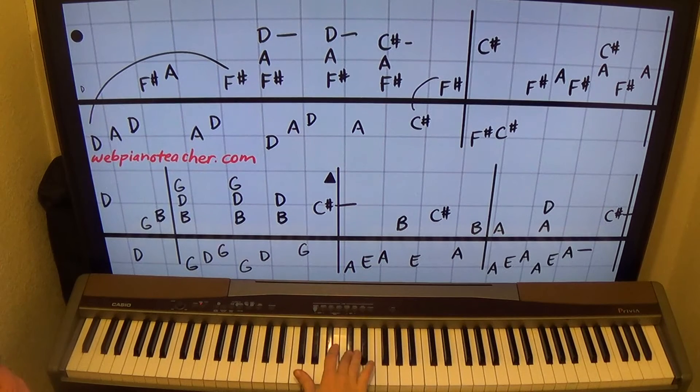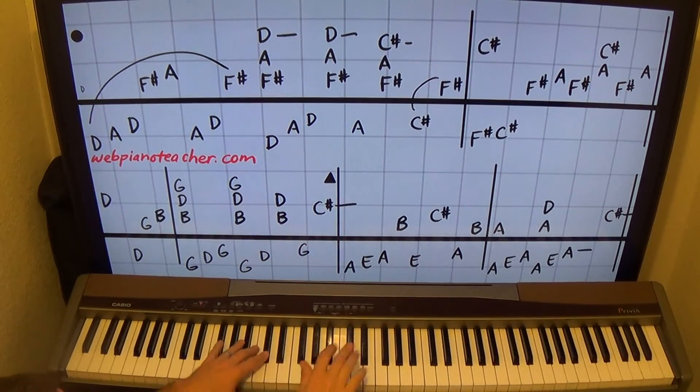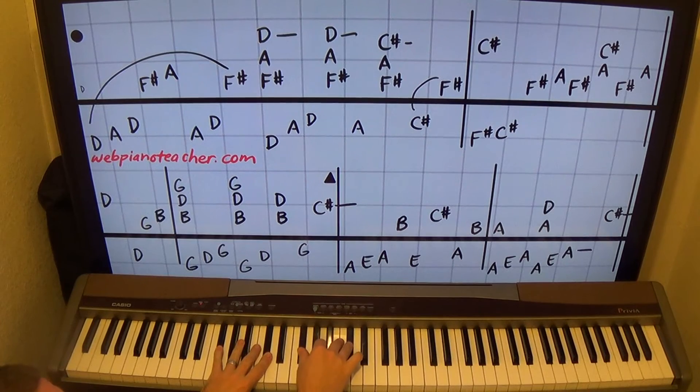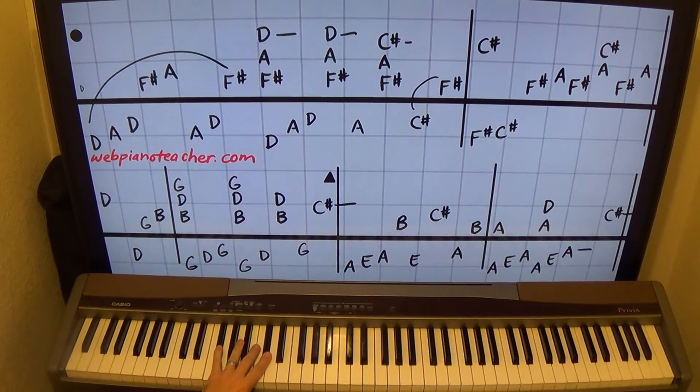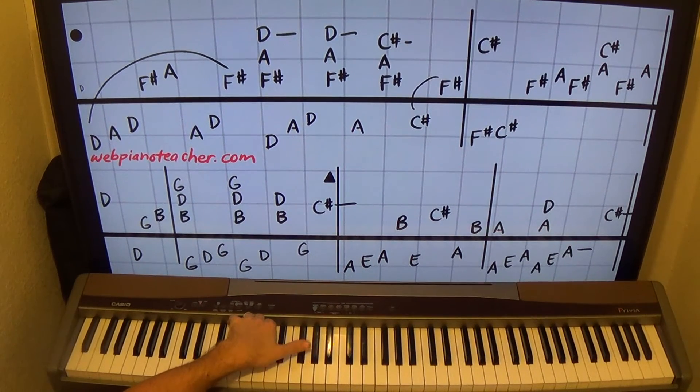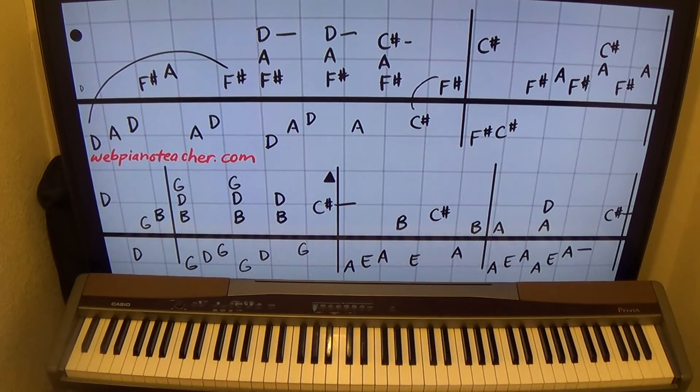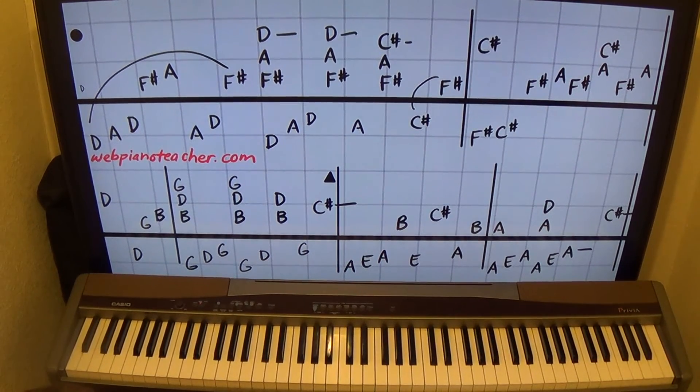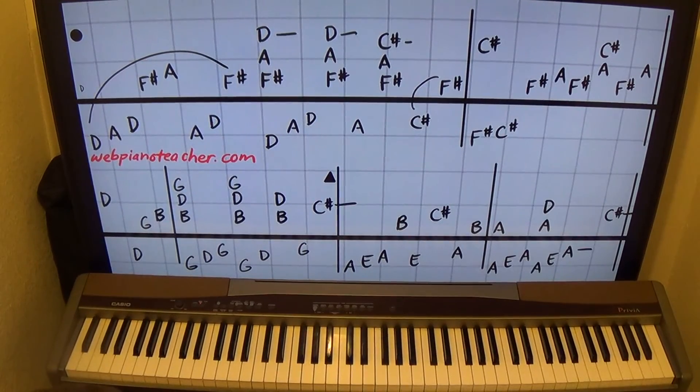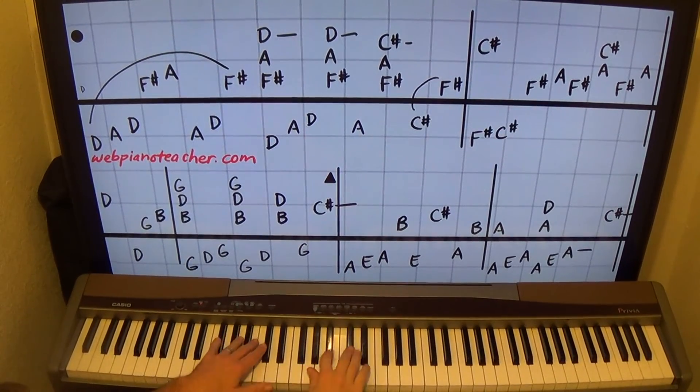So feel free to move that F sharp to the left hand if that's more comfortable for you. But anyway, the notes are C sharp in the right, middle C sharp, and then F sharp A. F sharp A and C sharp together, F sharp A. Left hand I just have F sharp, C sharp. If you have trouble voicing the melody, you might want to play that F sharp on the left. Either way is equally difficult, if it's difficult at all for you. Personal choice there.